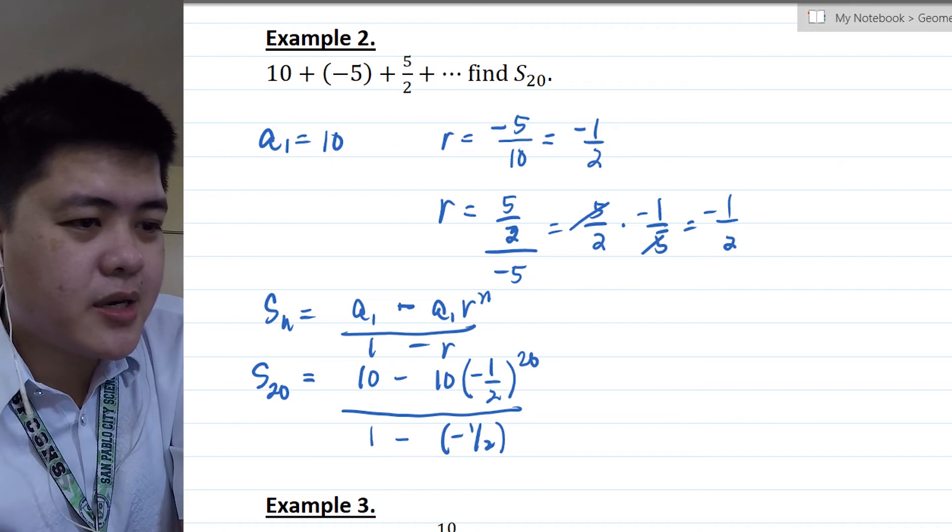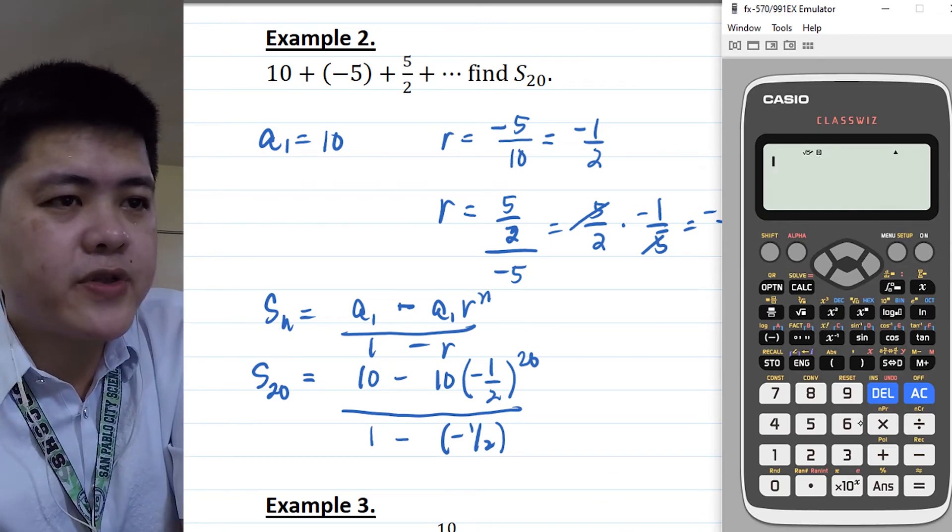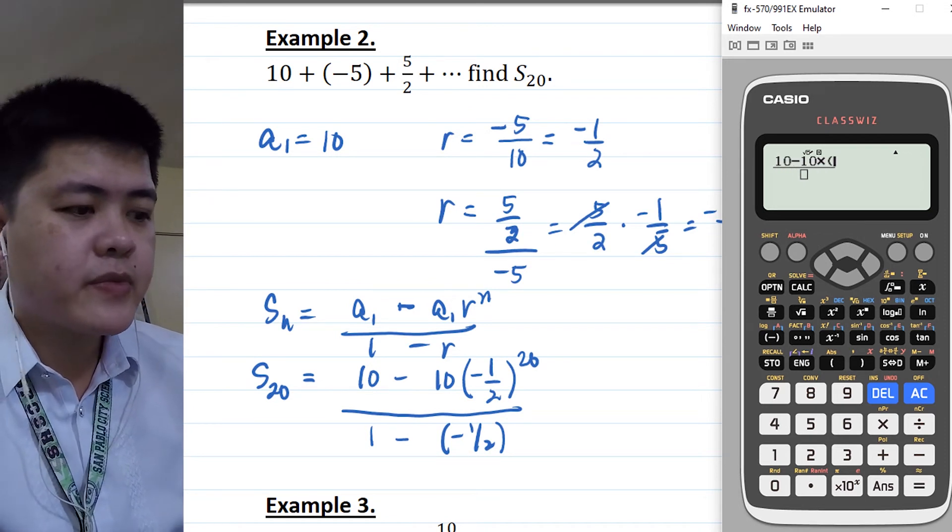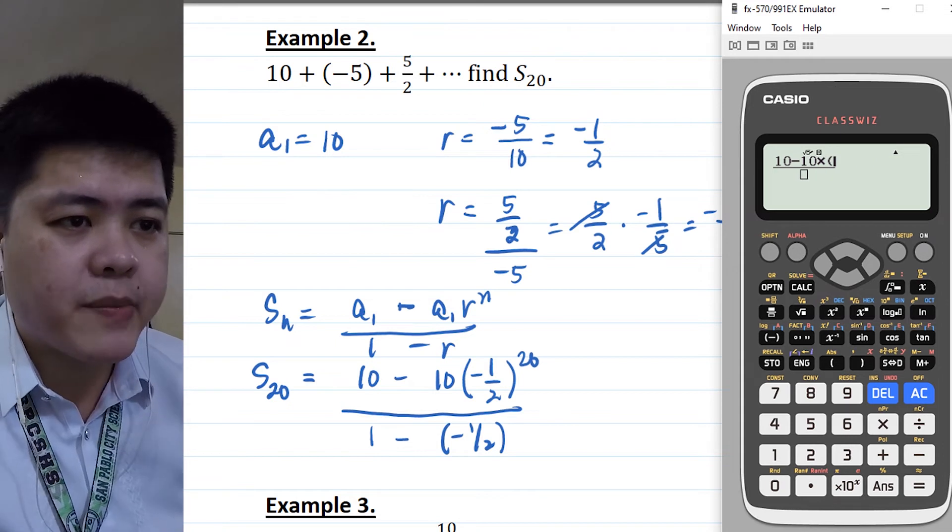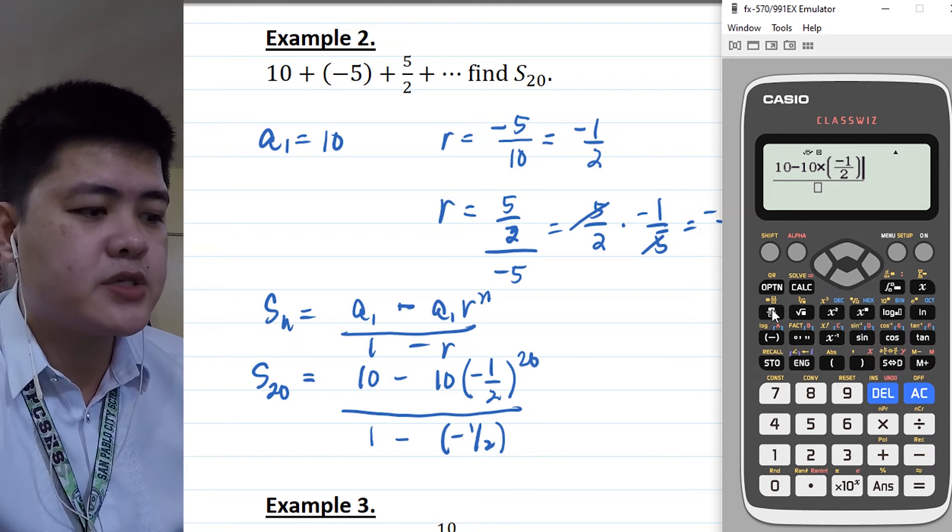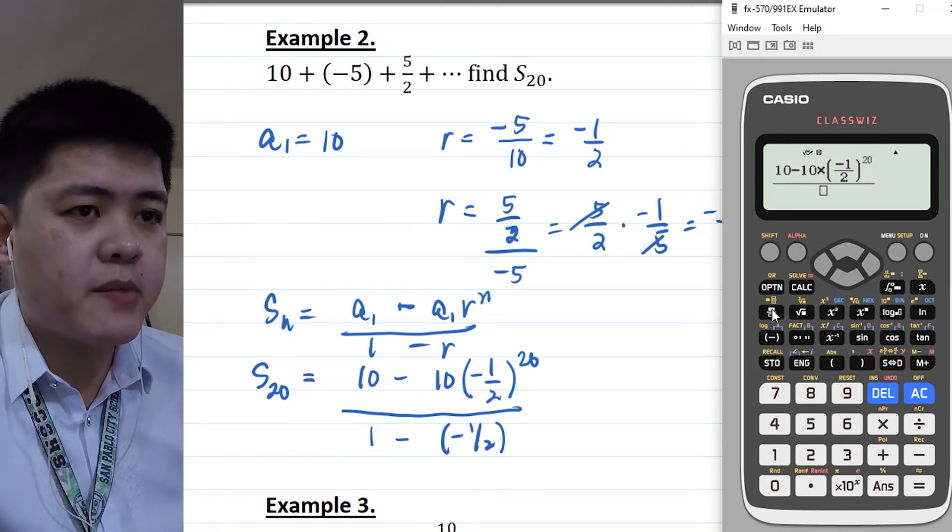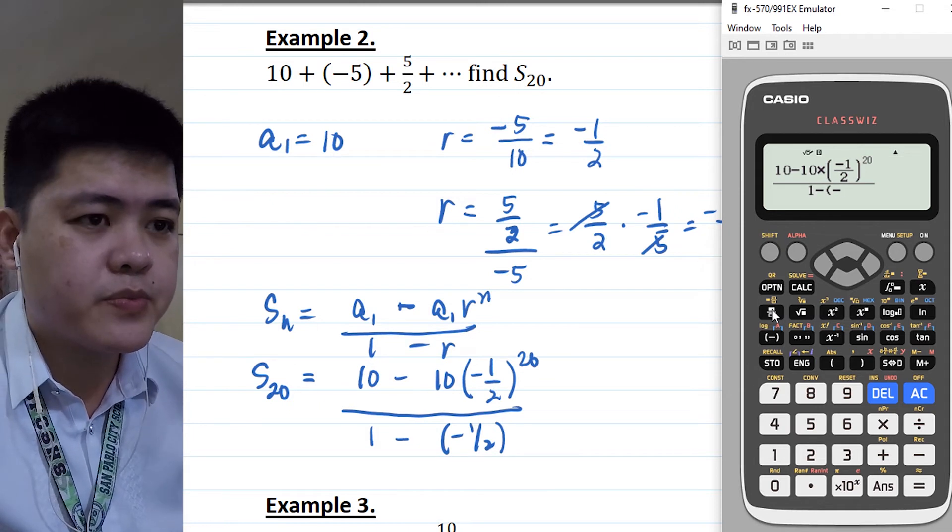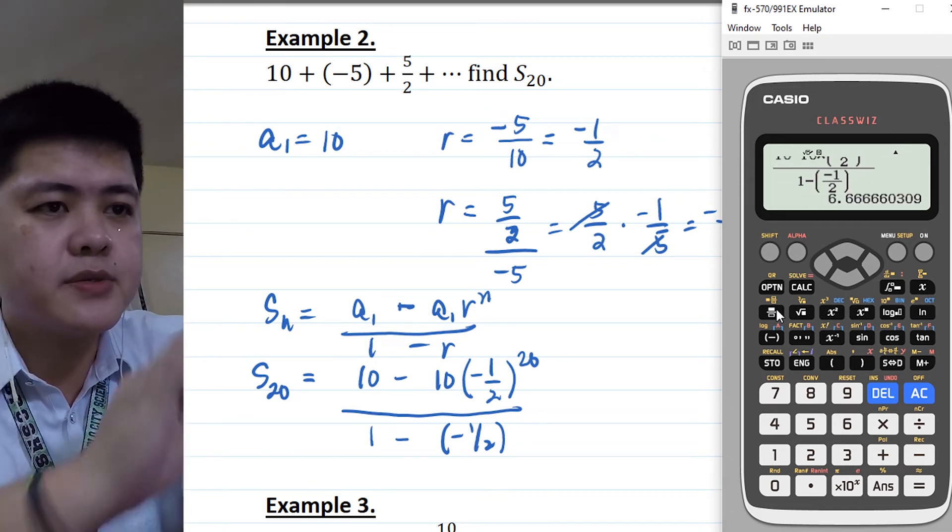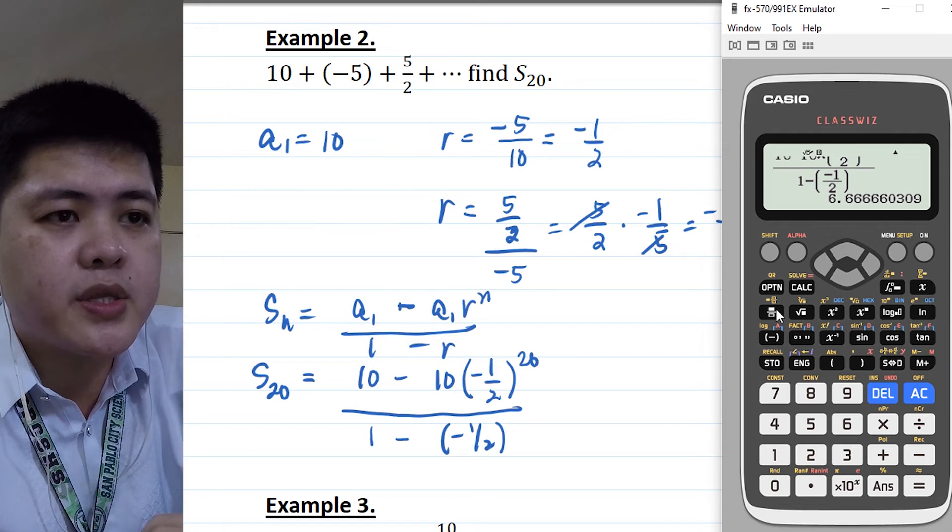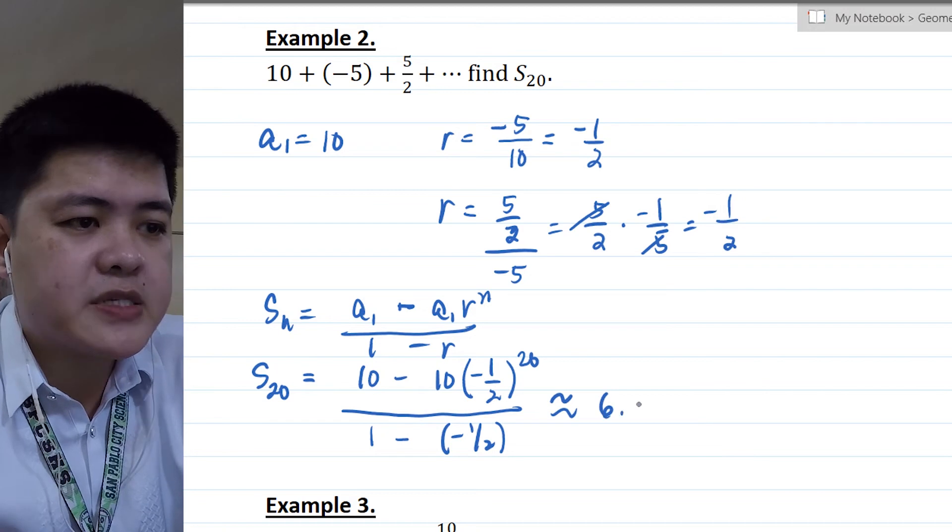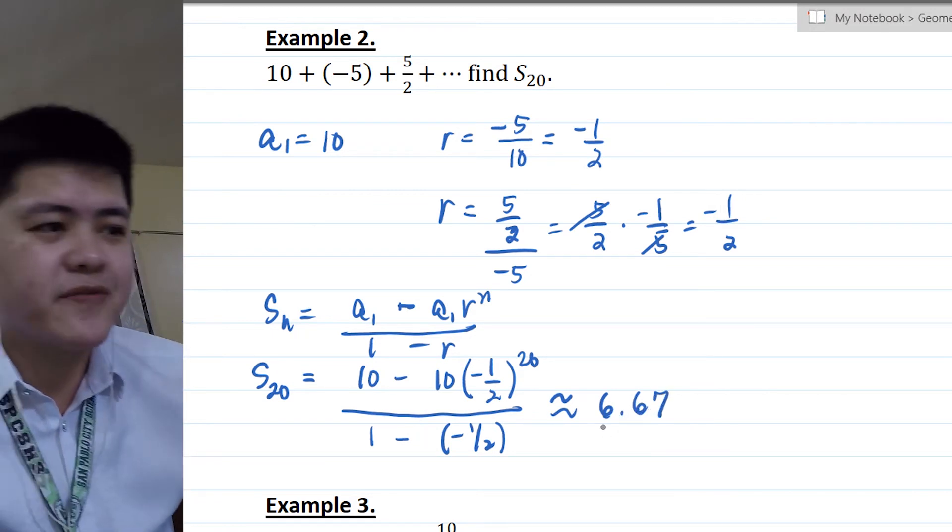So again, let's get our calculator and solve for this one. So we have 10 minus 10 times negative 1 over 2. To write it, you can do negative 1 over 2, close parentheses raised to 20 divided by 1 minus negative 1 over 2. And then let's press enter. So the answer is 6.66, or approximately 6.66. So the answer is approximately 6.67.